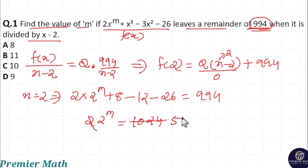2 goes into 1024 exactly 512 times, which means 2^m = 512. Therefore m = 9 because 2^9 = 512. So option D is the answer.